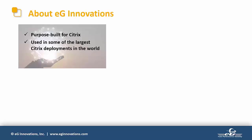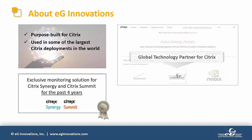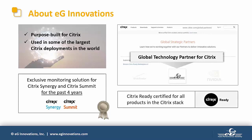Before we begin, a very quick introduction to EG Innovations. We are a software company delivering applications and infrastructure performance monitoring solutions to the global market. Citrix and virtual desktop technologies have been a key focus for us. We started working with Citrix way back in 2003, mainly because we saw a number of monitoring tools in the market but very few that were focused on the unique challenges that Citrix administrators faced. Our solutions are purpose built for Citrix, incorporate expertise from working with hundreds of Citrix deployments around the world, and are Citrix Ready certified.